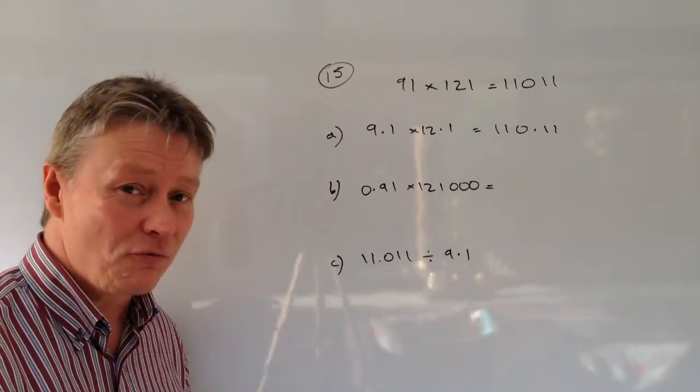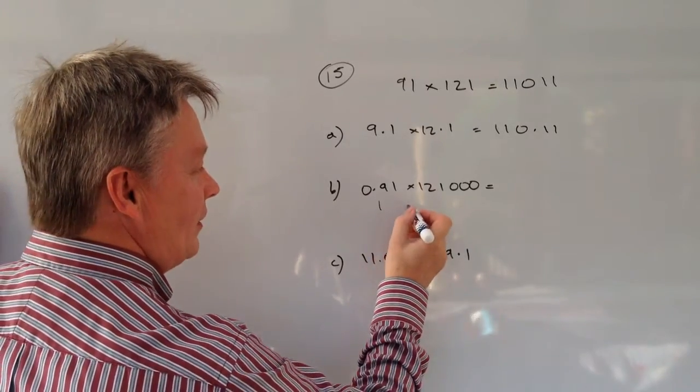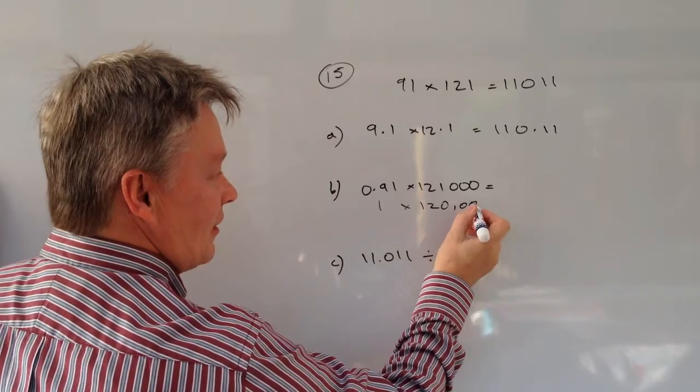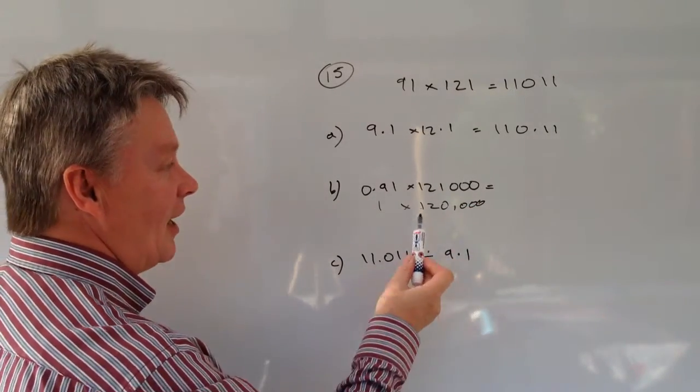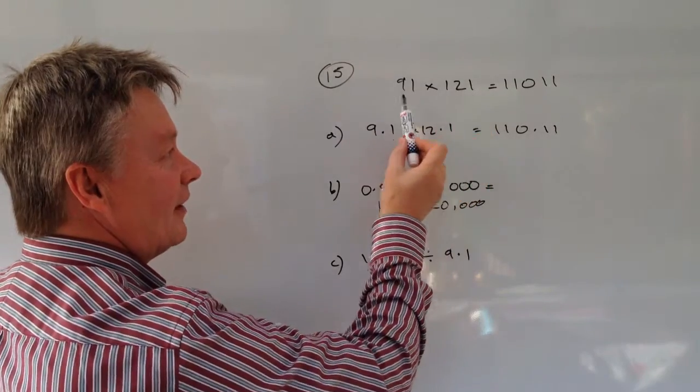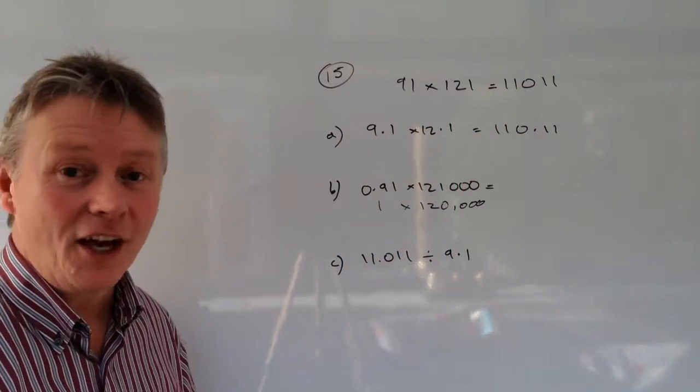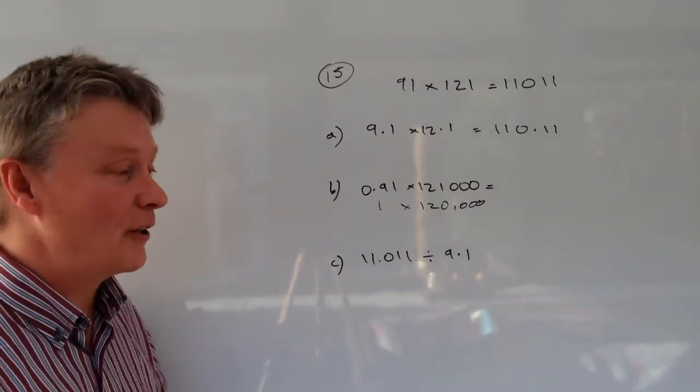Because 0.91 is really, really close to 1. So 1 times, let's say, 120,000 is going to give us 120,000. So I've used this digit, and I've used this combination of digits, so I'm looking at that, and my answer to this is going to be as close as I can get to 120,000.